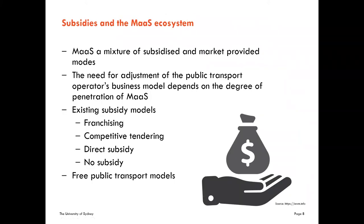Turning now to subsidies: aggregators will need to deal with modes which are subsidised and those which are provided by the market. For example, taxis, Ubers, and car share are market-provided, whereas public transport will be subsidised. How much the business model needs to change will depend on how mainstream MAS will become. The existing models of subsidy are documented in the discussion paper, and on the next slide we turn to the implications of these subsidies.